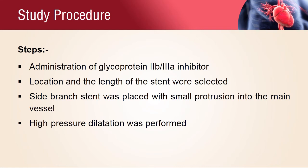A glycoprotein 2B/3A inhibitor was administered, then the location and length of the stent was selected. The side branch stent was placed with small protrusion into the main vessel, or a balloon in the main vessel was simultaneously dilated when the side branch stent was deployed. After stent implantation, routinely high-pressure dilatation was performed, including final kissing balloon dilatation after distal left main coronary artery bifurcation stenting.